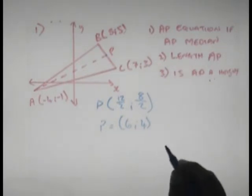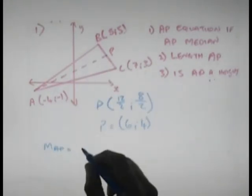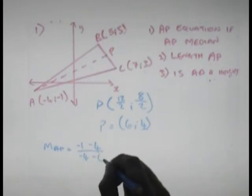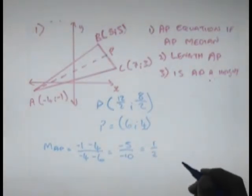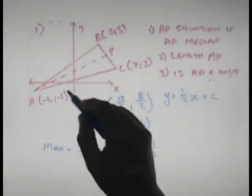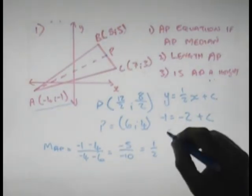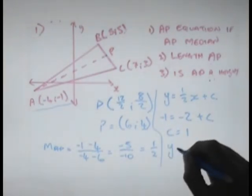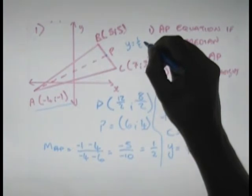Now that we have that, we can get the equation of AP. The gradient of AP equals (y2 − y1) / (x2 − x1), which gives us −1 over... negative 5 over negative 10, which equals positive 1/2. That means my equation for AP reads y = (1/2)x + c. Substituting in the point: −1 = (1/2)(−4) = −2 + c, so c = −1 + 2 = positive 1. That means our equation reads y = (1/2)x + 1.